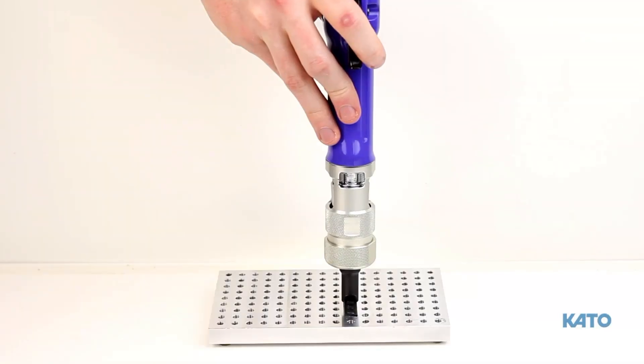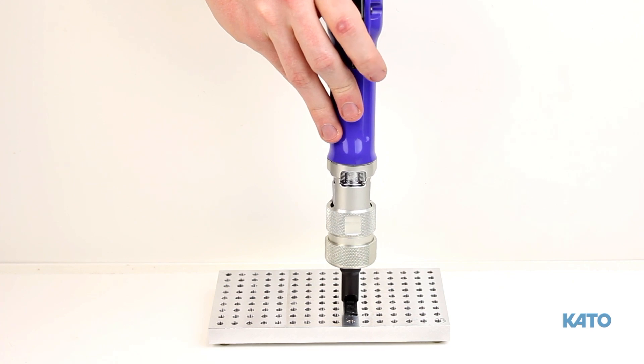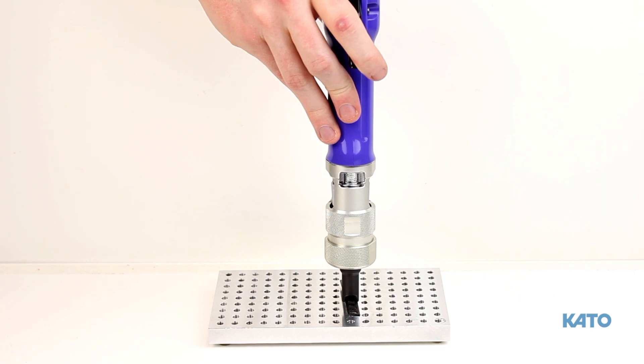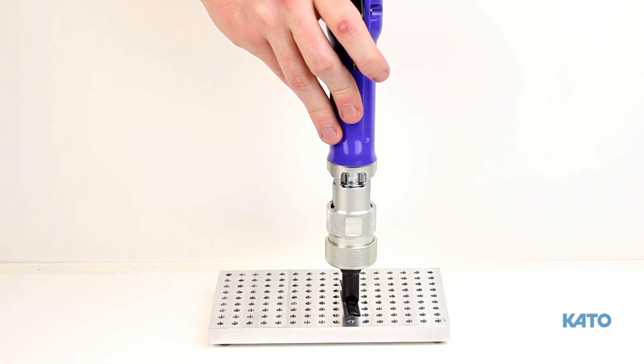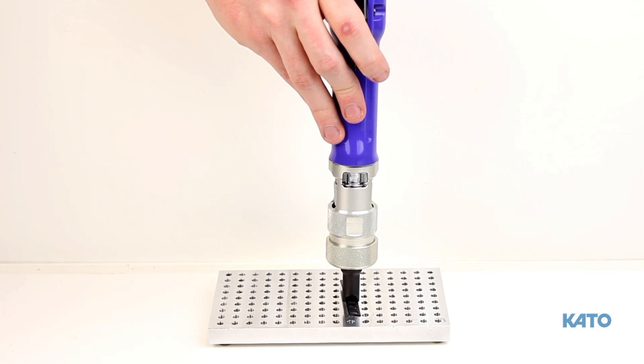It is very important to remember this is an auto-reversing tool. Once you press the trigger, do not release it. After the insert is installed, the mandrel will bottom out and cause the electric driver to reverse. Continue to hold the trigger until the mandrel exits the installed insert and has retracted far enough back to clear the well for the next insert.